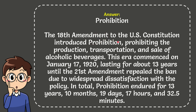The 18th Amendment to the US Constitution introduced Prohibition, prohibiting the production, transportation, and sale of alcoholic beverages. This era commenced on January 17, 1920, lasting for about 13 years until the 21st Amendment repealed the ban due to widespread dissatisfaction with the policy. In total, Prohibition endured for 13 years, 10 months, 19 days, 17 hours and 32.5 minutes. So that is the answer for the question — Prohibition.